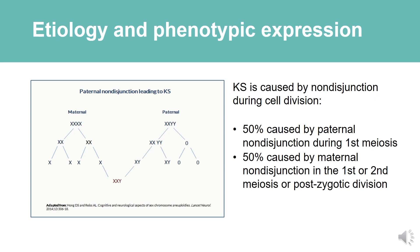Etiology and phenotypic expression: KS is caused by non-disjunction during cell division. This is a very important point for providers to understand, since many families and KS individuals are extremely anxious that KS is an inherited condition. They need reassurance it is a random situation that happens during meiosis, and research has shown it takes place almost equally on the paternal or maternal side. There is very little chance that families would have a second KS child, or that the KS individual would father a KS child.